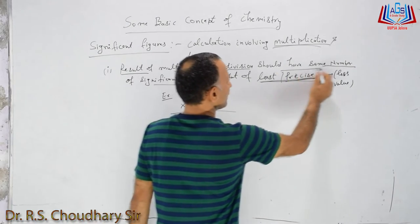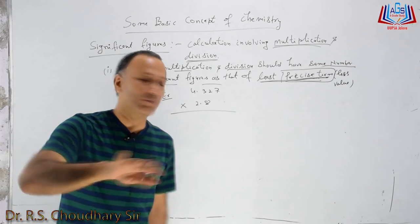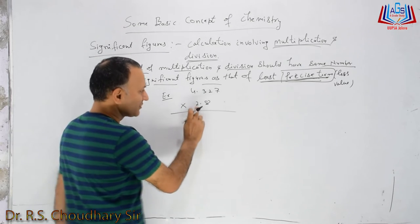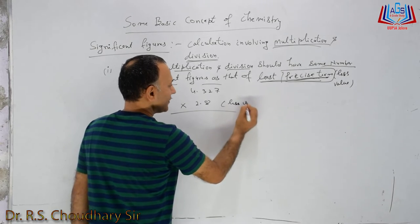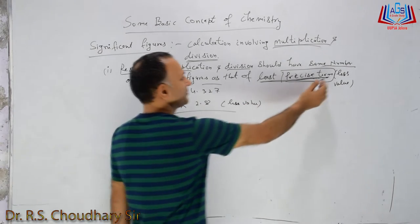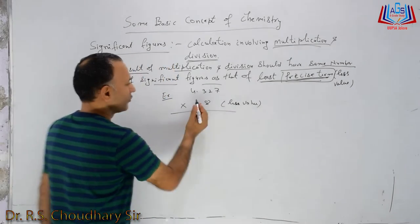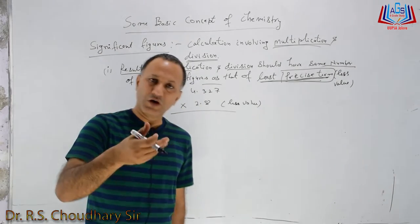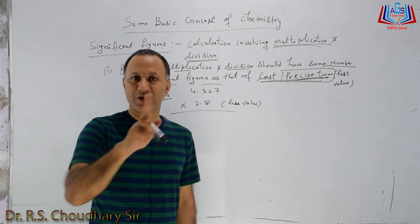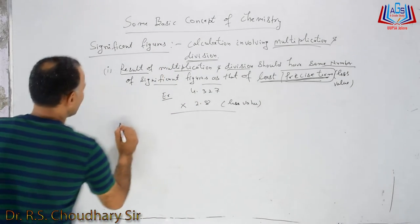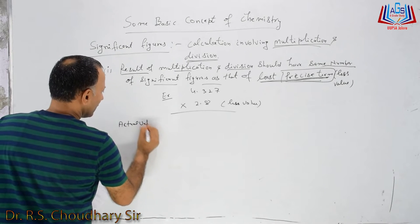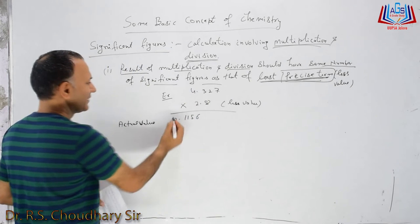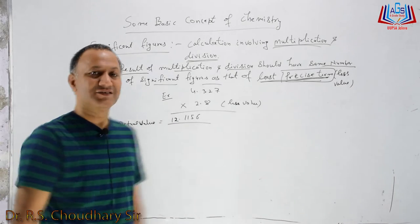You have to remember which has the least precise term — the one with the lesser value, which is 2.8. How many significant figures does the least value have? This value is the least value — it has 2 significant figures. If we multiply, the actual value comes out to 12.1156.